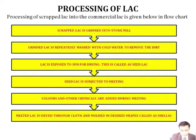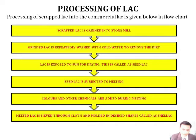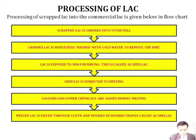Processing of raw lac into commercial lac involves the following steps: scrap lac is ground in a stone mill; the ground lac is repeatedly washed with cold water to remove dust, dirt, and other useless particles; then lac is exposed to sun for drying — this is called seed lac. The seed lac is then subjected to melting by heating. Different colors and other chemicals are added during melting, and finally the melted lac is sieved through cloth and molded into the desired shape as required — this is called shellac.